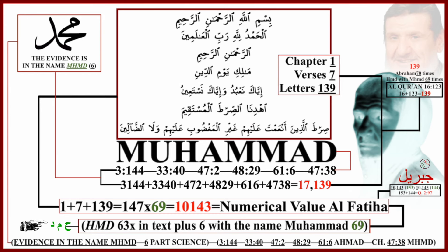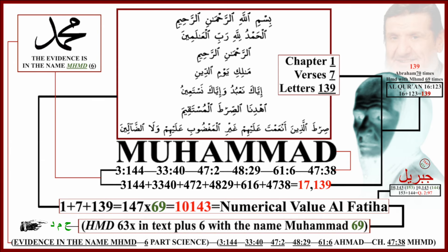The evidence is in the name Muhammad. The trilateral root Hamd — HMD — occurs 63 times in the text of the Quran, plus the six times the name Muhammad is mentioned, for a total of 69. 147 times 69 equals 10,143, and 10,143 is the standard numerical value for the whole chapter of Al-Fatiha, the opener.